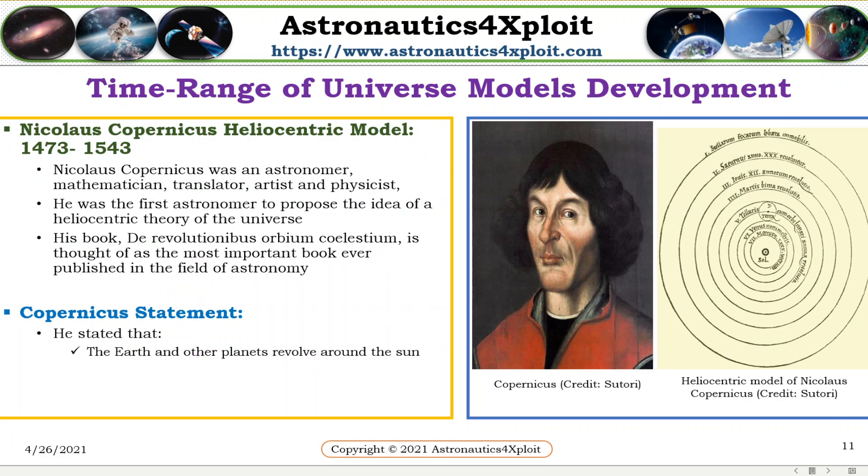Nicholas Copernicus' heliocentric model: Nicholas Copernicus was an astronomer, mathematician, translator, artist, and physicist. He was the first astronomer to propose the idea of a heliocentric theory of the universe. His book is thought of as the most important book ever published in the field of astronomy. He stated that the heart and other planets revolve around the sun.